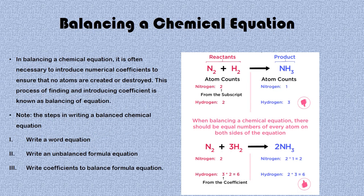Now we will be looking at balancing a chemical equation. In balancing a chemical equation, it is often necessary to introduce numerical coefficients to ensure that no atoms are created or destroyed. This process of finding and introducing coefficients is known as balancing of equations. There are some steps to note: number one, write a word equation for the reaction; number two, write an unbalanced formula equation for the reaction; and three, add coefficients to balance the formula equation.